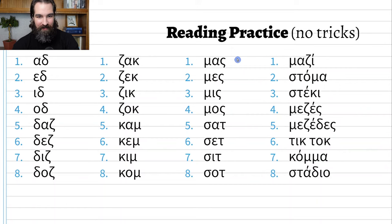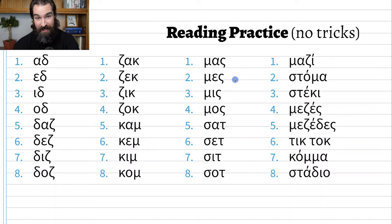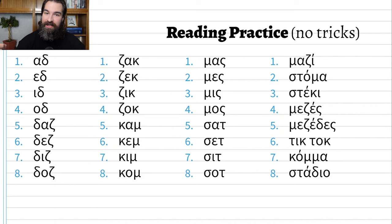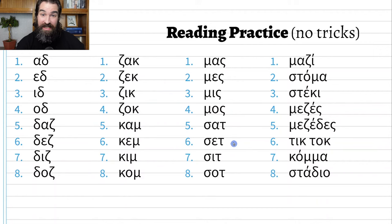Third column starts with mu and ends with sigma — the final sigma at the end of the word. Number one: 'mas.' Number two: 'mes.' Number three: 'mees.' Number four: 'mos.' For number five we have sigma at the beginning or middle of a word — 'sat.' Number six: 'set.' Number seven: 'seet.' Number eight: 'sot.'